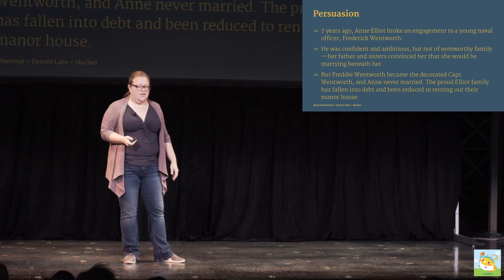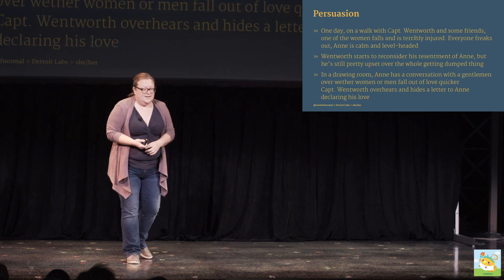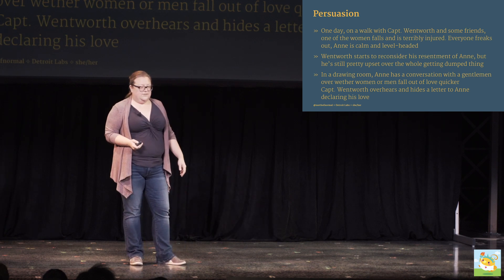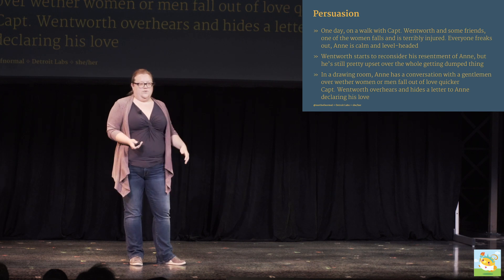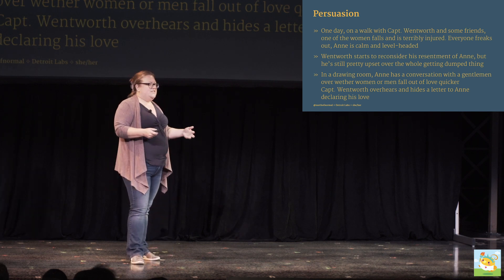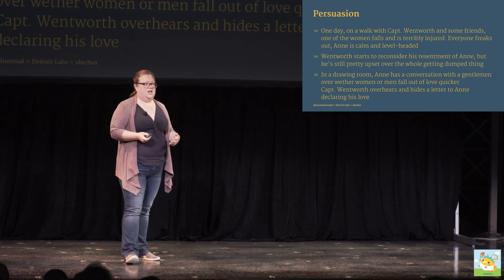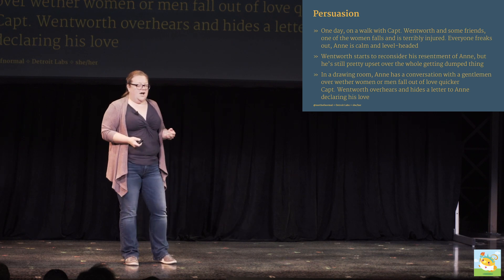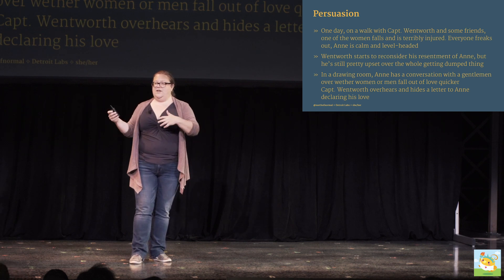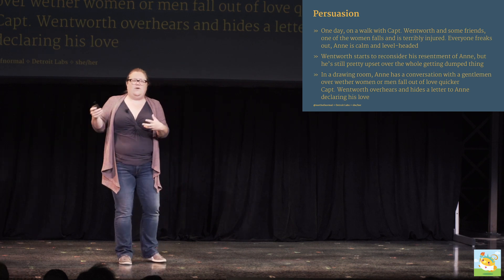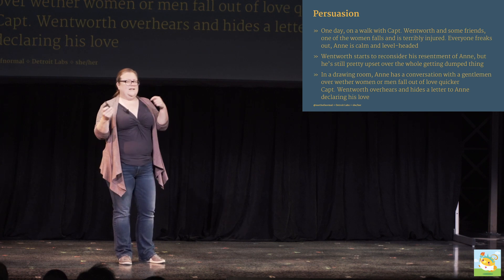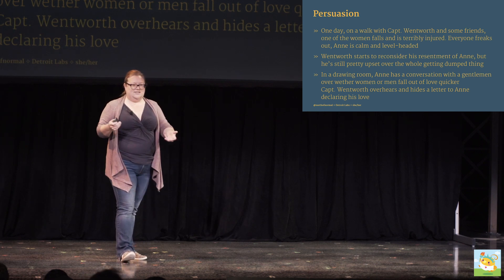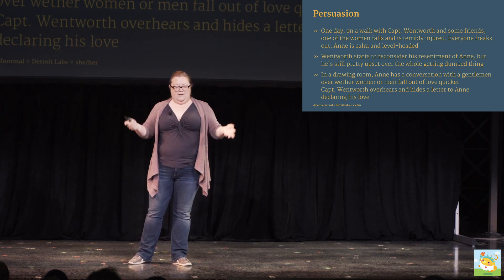Frederick Wentworth went on to become Captain Wentworth, celebrated hero of the Napoleonic Wars. Anne's father blew all their money, and so they were reduced to renting out the manor house they were so proud of — and because this is a novel, they rented it to a friend of Wentworth's. One day they're all out for a walk and Wentworth comes back into her life. There's a fall, one of those Regency scenes of people panicking and women fainting. Anne keeps her head, arranges for a doctor, handles everything. Wentworth starts to reconsider. Eventually there's this amazing scene where they're in a drawing room and she's having a conversation about whether men or women fall out of love faster, and while he's listening, he's writing her this gorgeous love letter about how he's still in love with her and if she's still interested, he'll meet her downstairs. And so they all live happily ever after.